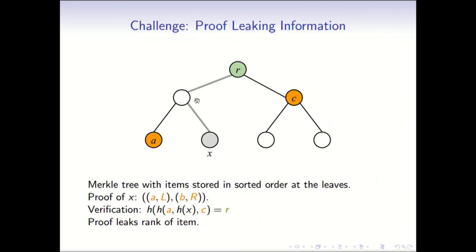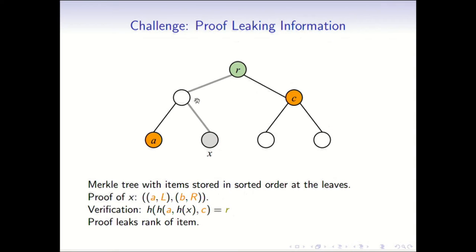For example, think of the Merkle hash tree, which is the most widely used authenticated data structure. In this case, the proof of an element X that belongs to the set is actually the sibling path — the orange nodes along with the root. This proof reveals the rank of the element in the database. It also reveals the number of elements just by the height of the tree and so on.